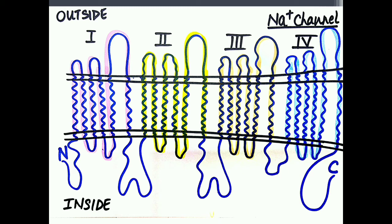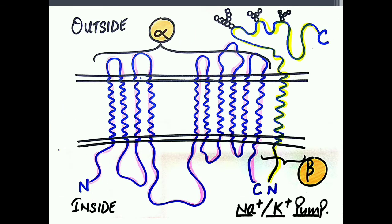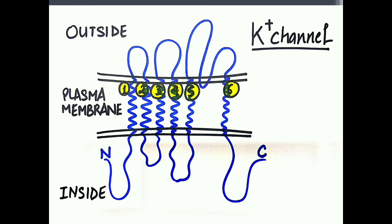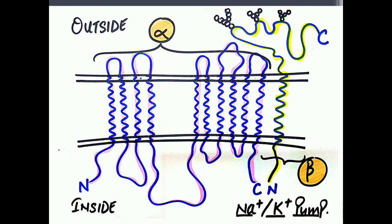These ionic channels — which are ligand gated and voltage gated — are pores that take part in facilitated diffusion. We are here to deal with the sodium potassium pump structure, which is distinct from those individual sodium and potassium ion channels that perform facilitated diffusion.